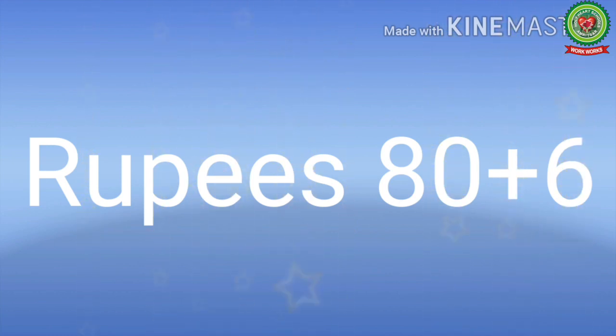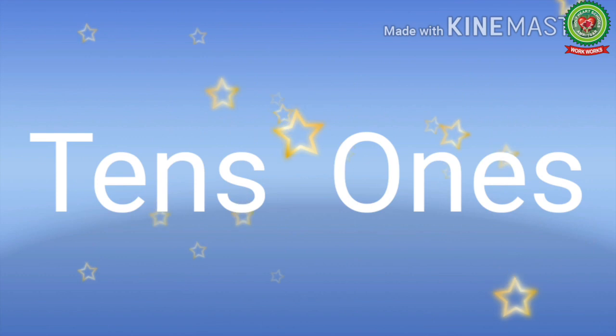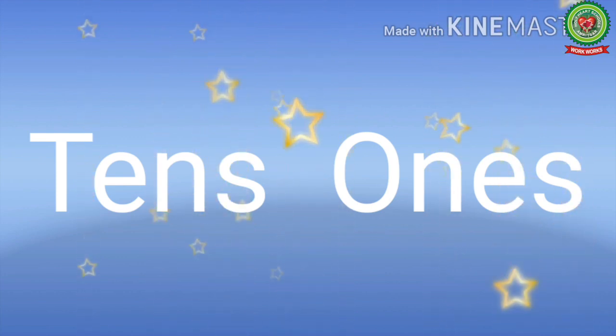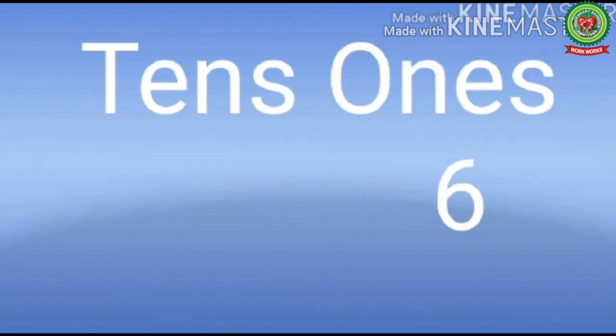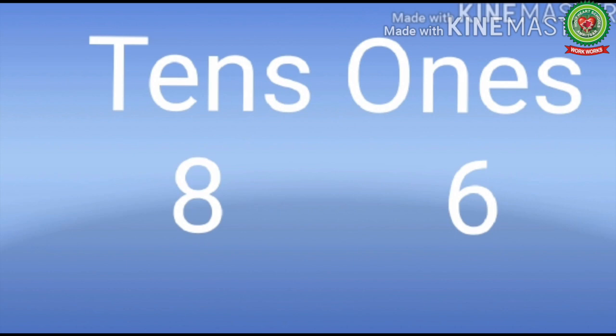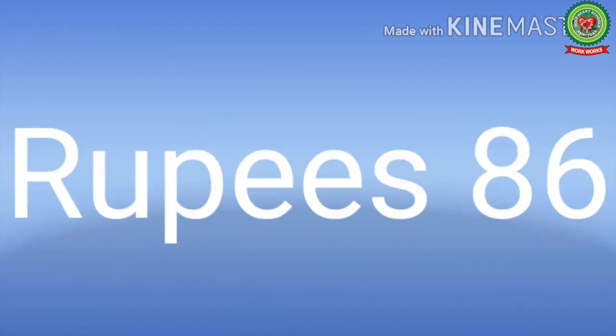First, he writes the place value chart with columns for tens and ones. 6 has no zero, so he writes 6 under ones. 80 has a ten, so he writes 8 under tens. So he has a total of 86 rupees.